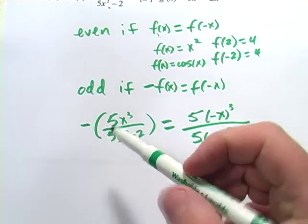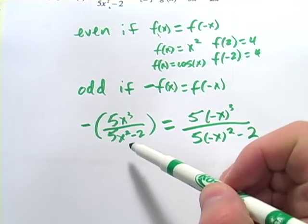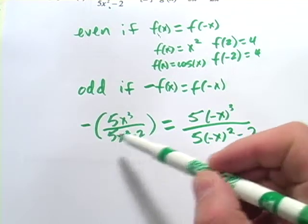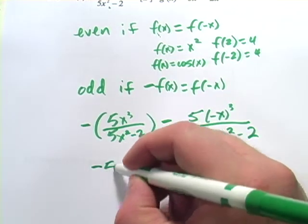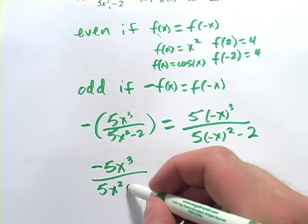So let's do a little bit of math here. Now this minus sign, it either goes in on the top or the bottom. If I bring it in on the top, it just changes that sign. If I bring it in the bottom, I'd have to change both the signs on the bottom. So I'm just going to bring it in on the top. So I've got negative 5x cubed over 5x squared minus 2.